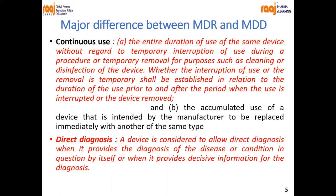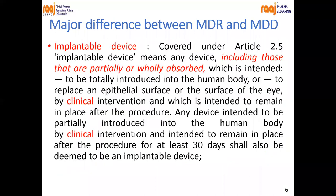Direct diagnosis means a device is considered to allow direct diagnosis when it provides the diagnosis of a disease or condition by itself, or when it provides decisive information for the diagnosis. Direct diagnosis is very important because it should give a perfect result. Examples include the COVID rapid kit to diagnose whether a patient is positive or negative, and the pregnancy test kit (prega kit) where a few drops of urine give a result.